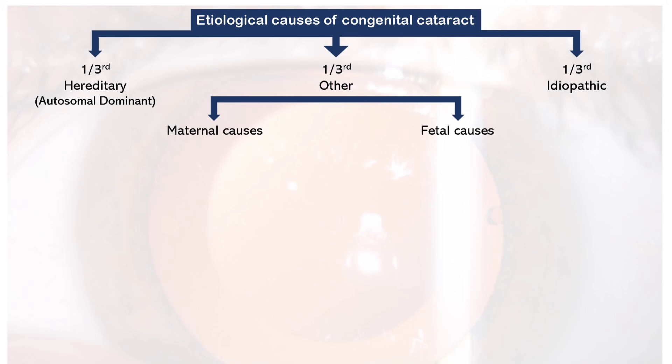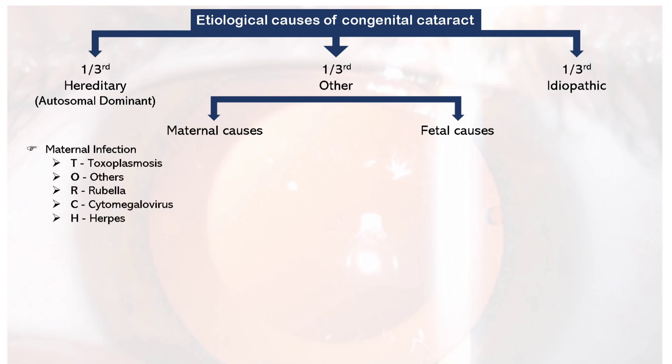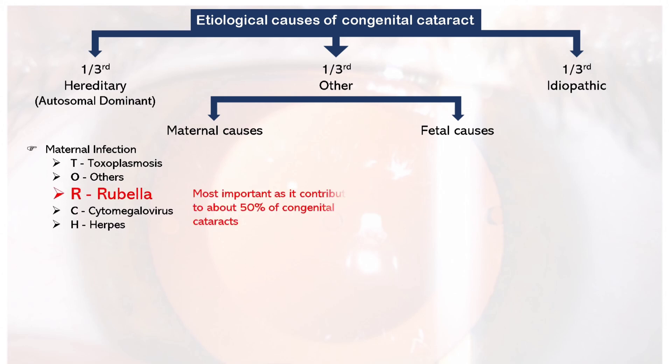Maternal causes include maternal infections, specifically the TORCH group of infections, where T stands for toxoplasmosis, O for others, R for rubella, C for cytomegalovirus, and H for herpes. We should always screen a pregnant woman for these infections because they can lead to congenital cataract. Out of all these, rubella is the most important, contributing to about 50% of congenital cataracts.